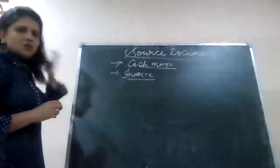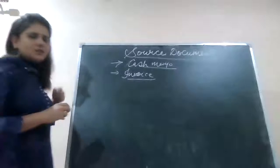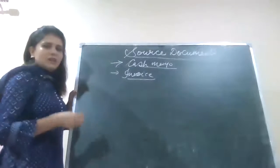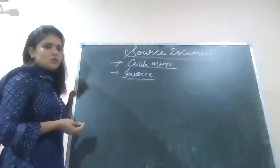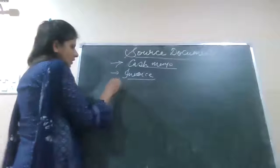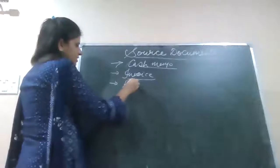When you sell goods on credit basis you send an outward invoice to your customer. And when you yourself purchase goods in your business for resale purpose you get inward invoice. And after that we get a receipt.